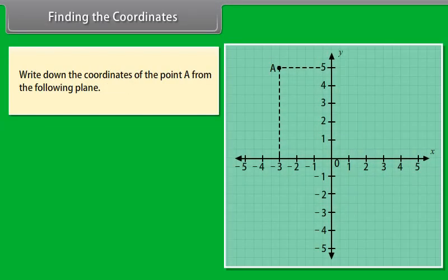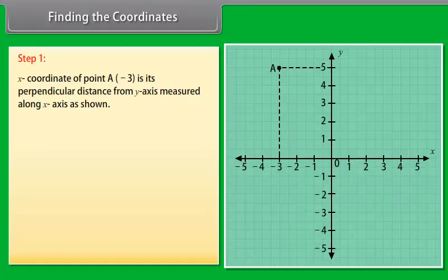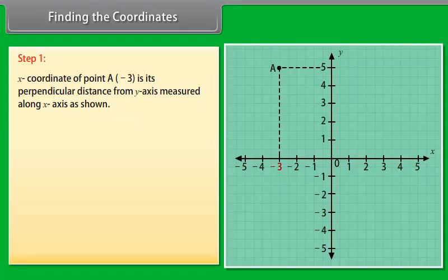Finding the coordinates. Write down the coordinates of the point A from the following plane. Step 1: The x-coordinate of point A is minus 3. It is the perpendicular distance from the y-axis, measured along the x-axis, as shown below.